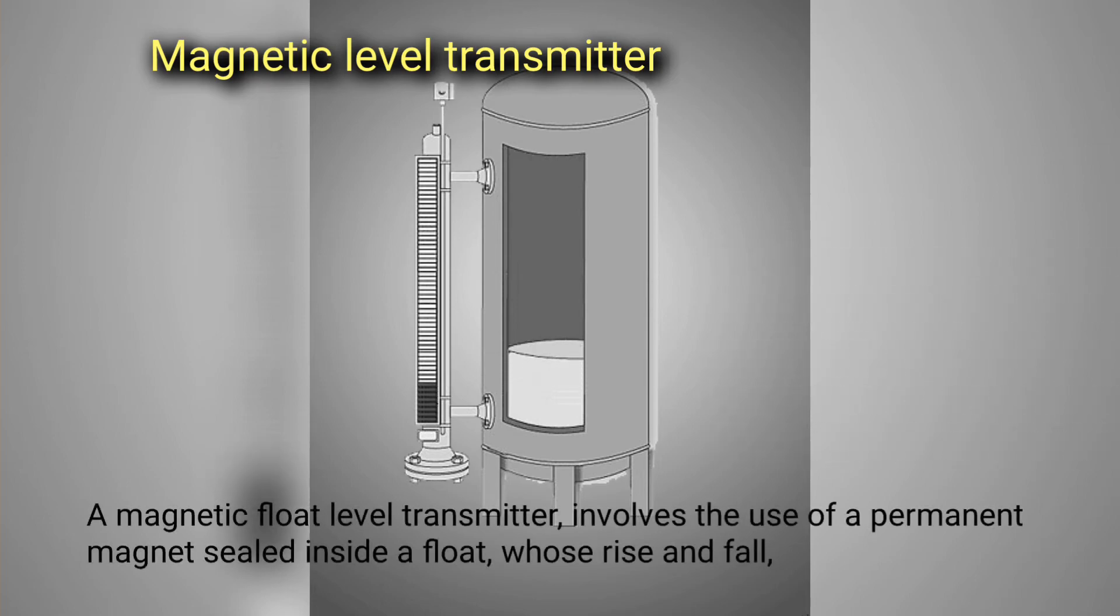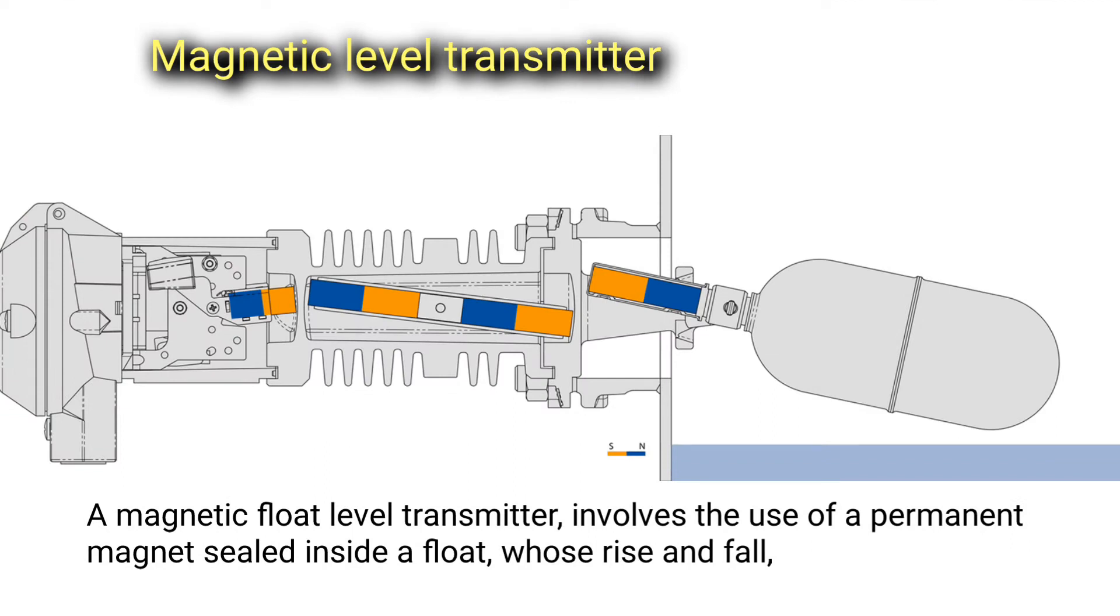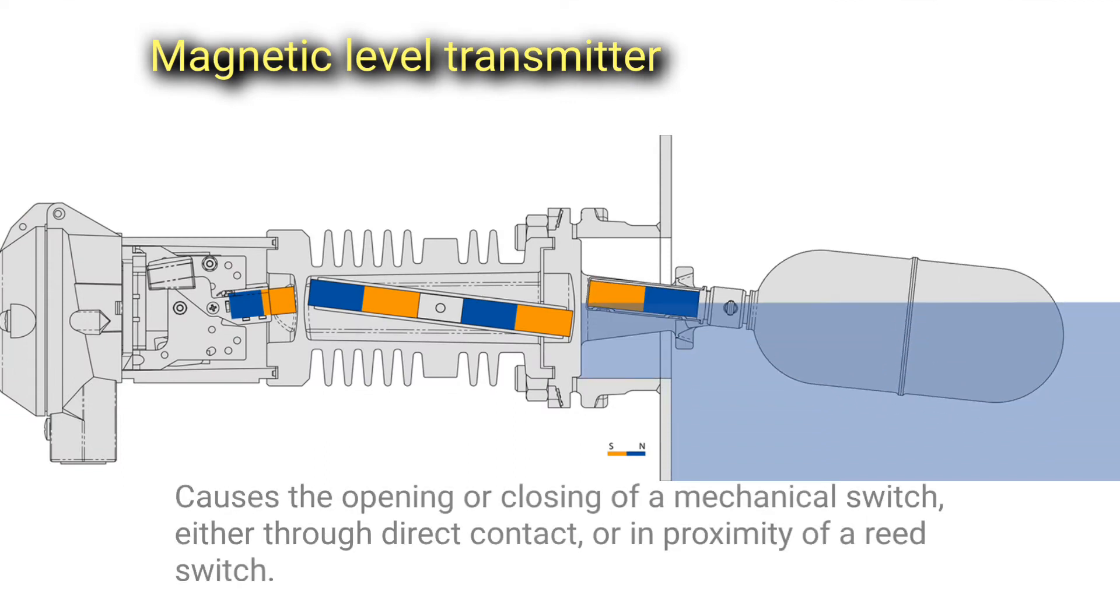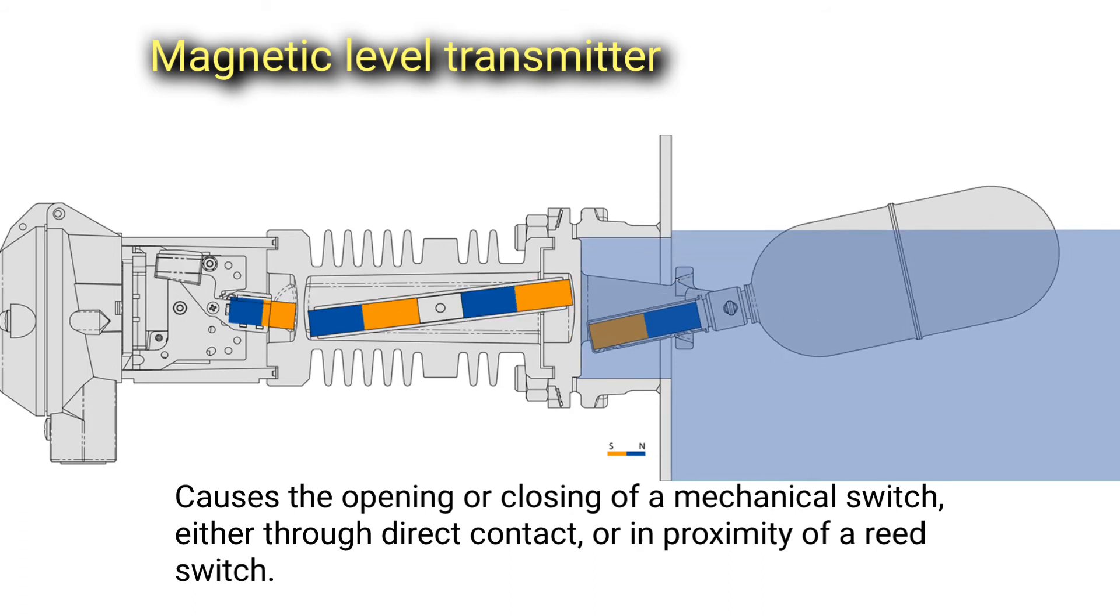A magnetic level transmitter involves the use of a permanent magnet sealed inside a float, whose rise and fall causes the opening or closing of a mechanical switch, either through direct contact or in proximity of a reed switch.